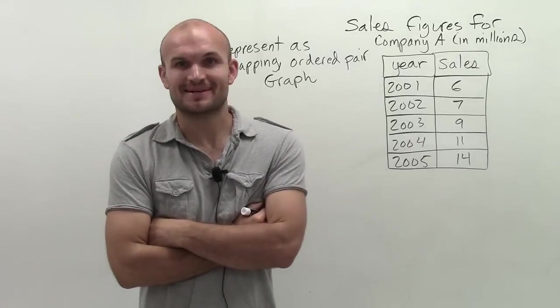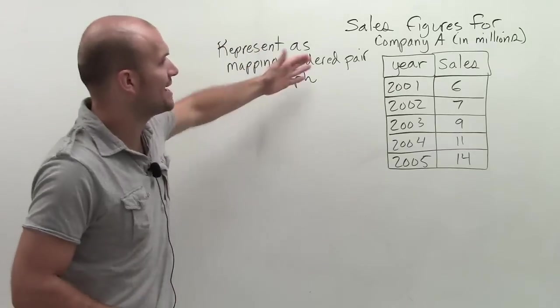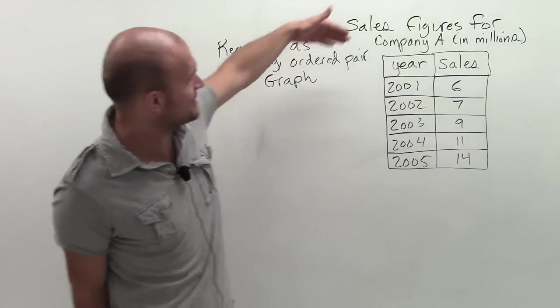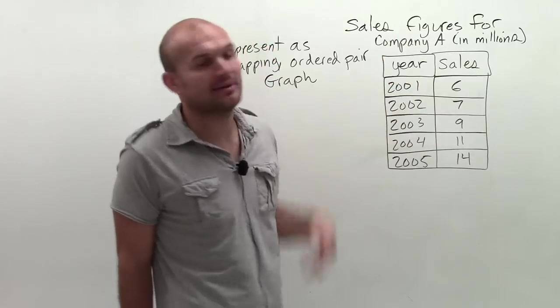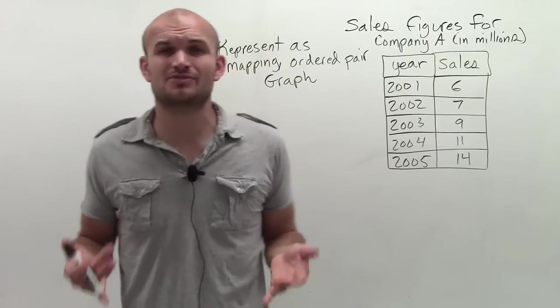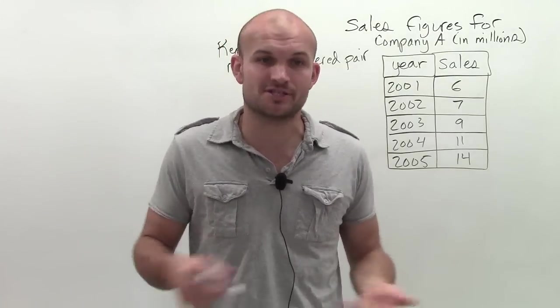Alright, I got a big problem here, so I'm going to do my best to try to make this nice and short. What we have here is a relation, and the relationship is the year and the sales for company A in millions. What we want to do is represent this relation in different formats. Remember I talked about there's different ways to represent a relation.